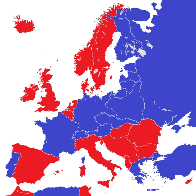As of 2017, 159 of the world's 206 sovereign states use the word 'republic' as part of their official names. Not all of these are republics in the sense of having elected governments, nor is the word 'republic' used in the names of all nations with elected governments.